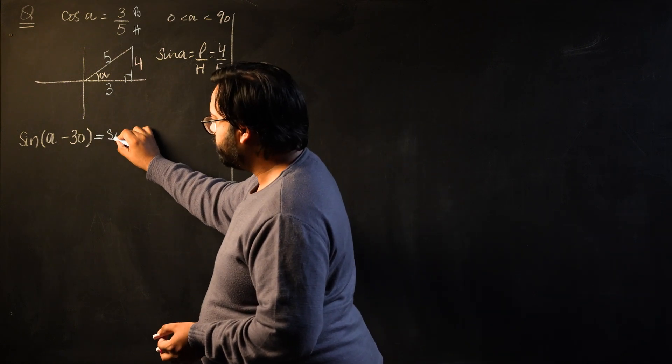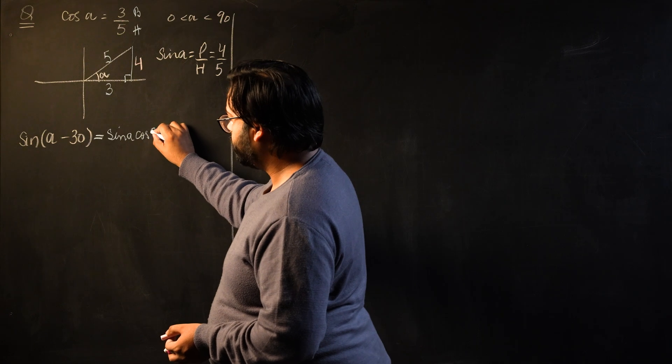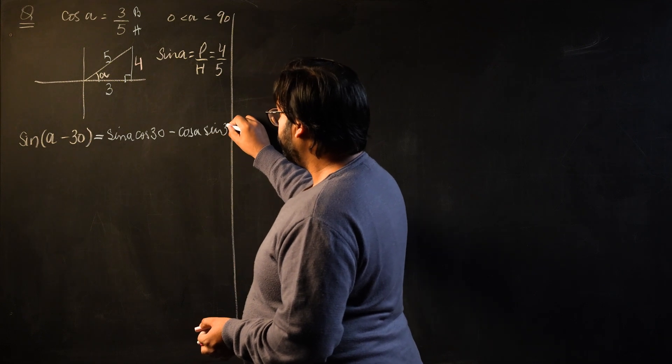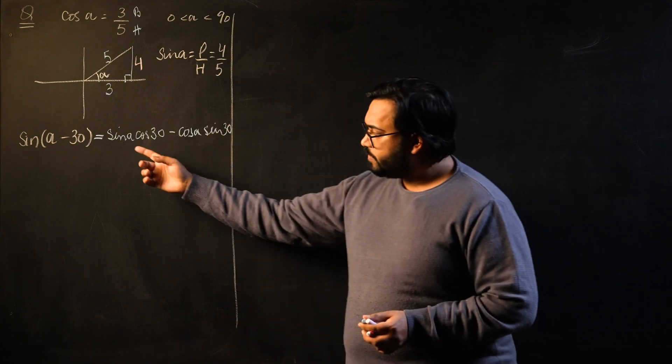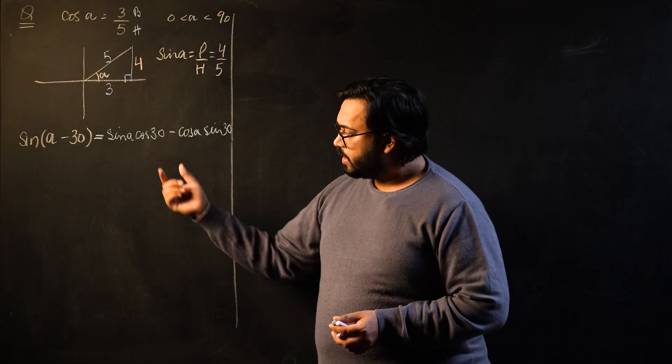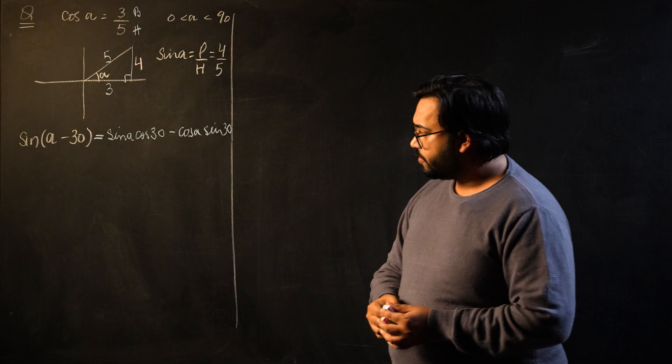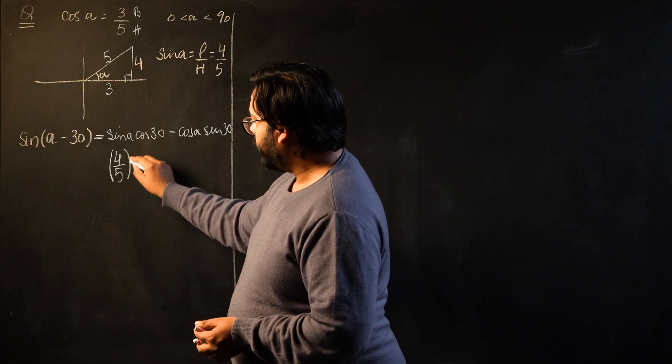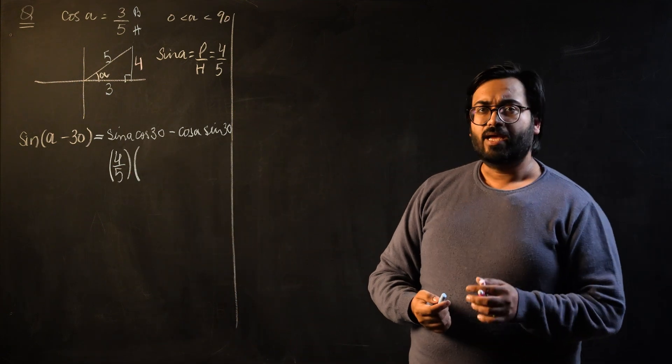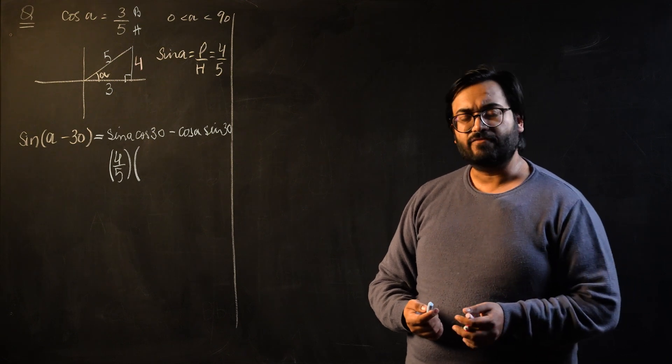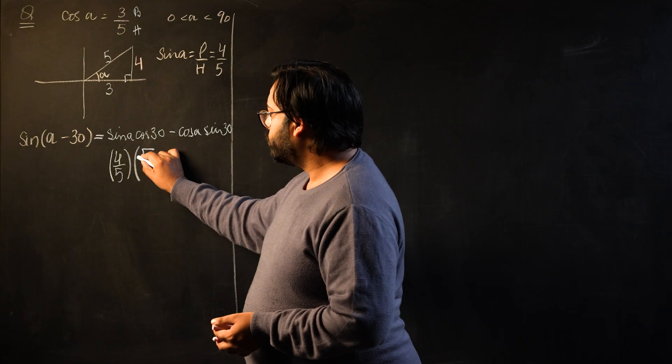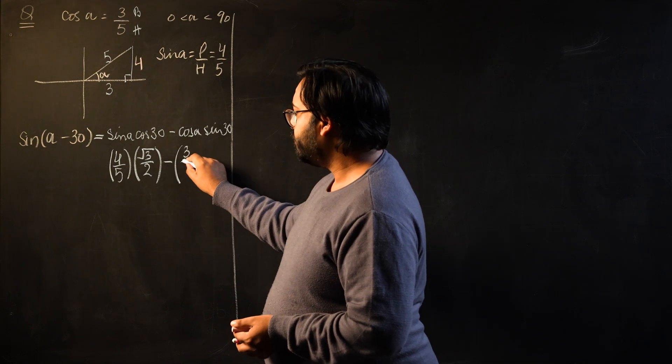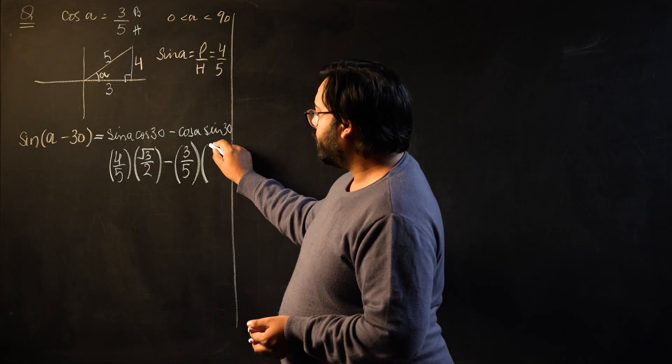Let's expand this using compound angle. This would be sin(α)cos(30°) - cos(α)sin(30°). Let's start putting in values. Sin(α) is 4/5, and cos(30°) - you guys are supposed to know the values for 30, 45, and 60 for all trigonometric ratios - so cos(30°) is √3/2. Minus cos(α), which was given as 3/5, and sin(30°) is 1/2.